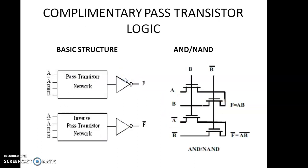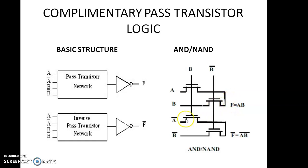Next, complementary pass transistor logic. This is the basic structure of complementary pass transistor logic. Here we are implementing AND and NAND. B and B complement are the control signals. If B = 1, A passes to the output, so AB + B·B_complement = AB + 0 = AB. Our final output is F = AB. Here these inputs are just complement to the other inputs — here AB, here A_complement and B_complement. From here we will get the output F bar = AB all bar. Here we will get the AND output; here we will get the NAND output.